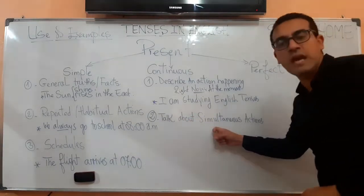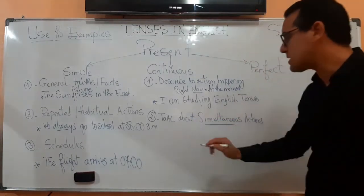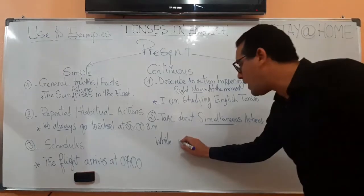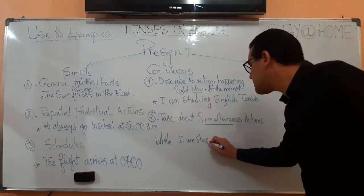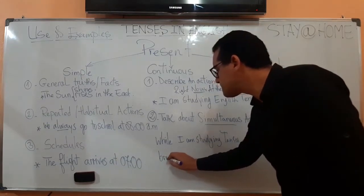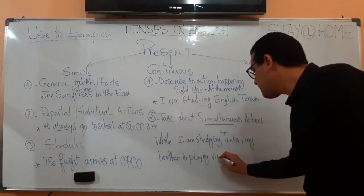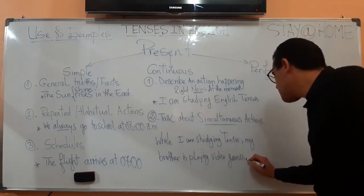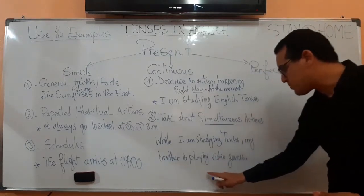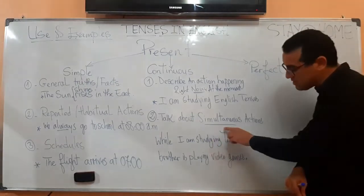The present continuous is also used to talk about simultaneous actions — actions existing or happening at the same time. We use 'while' to join both actions. For example: while I am studying tenses, my brother is playing video games. These are two actions happening at the same time. We call them simultaneous.